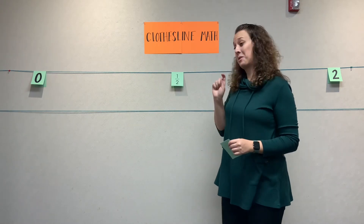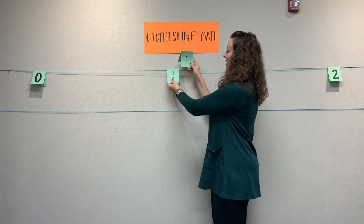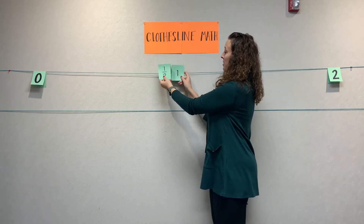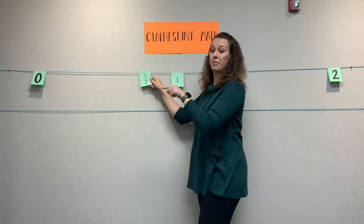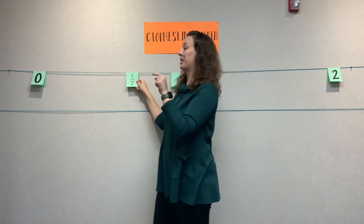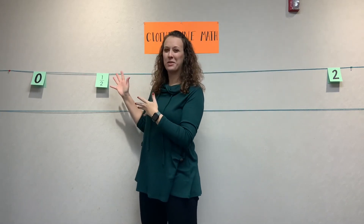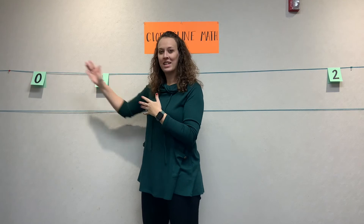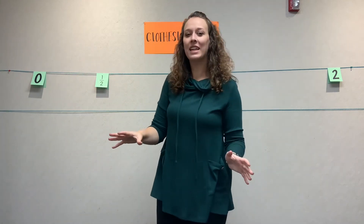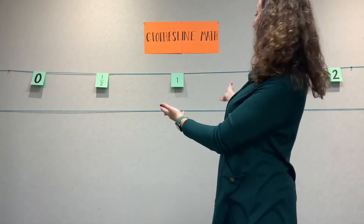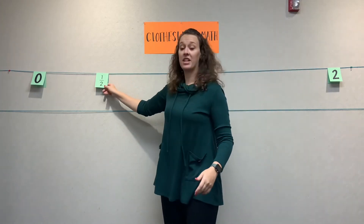The class is responding — no, it needs to go that way. Why? Because one is the halfway point between zero and two. So they're pointing, they're all participating. It's hard to tell when you're up at the board exactly where the scale is, so the class really gets to be the perspective because they can see it better than the person at the board.